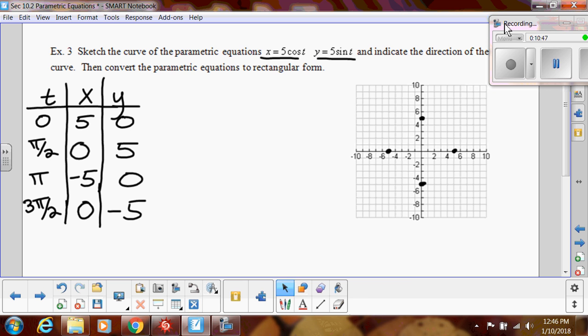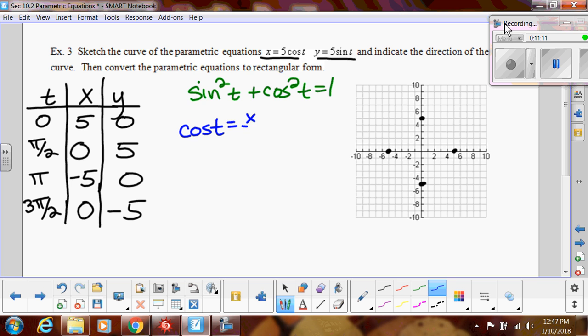Before I actually connect those to make a graph, let's convert it to rectangular form to make sense. So when you have trig equations, remember our Pythagorean identity, sine squared plus cosine squared equals one. And if I solved it, instead of solving for t or x like we did in the last one, I'm going to solve this for cosine. So cosine of t is equal to x over five. And sine of t is equal to y over five.